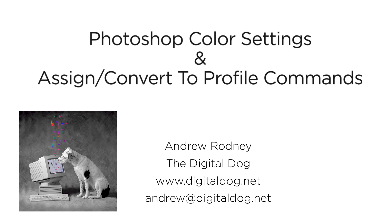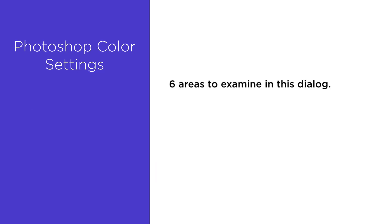Let's first start with the Photoshop color settings. There are six areas in the dialog to examine, and this is one of the most populated or option-heavy areas of any dialog box anywhere in Photoshop. The first thing to do is just break everything down into groups. At least two of them are very important to examine in detail, and the others we can skip over rather quickly.